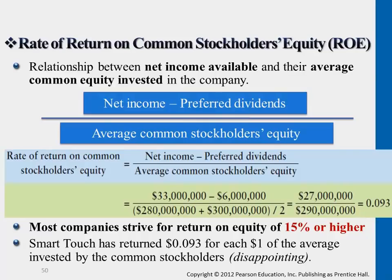Following the previous example, we still have $33 million net income. Assuming preferred dividends is $6 million, we subtract that and divide by the average level of common stock equity. What this means is we're trying to understand the relationship between the return given to shareholders compared to what they contributed to the company — this is the contributed capital from shareholders.